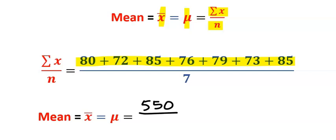Divide by the number of students in the class, which is the size of the sample data, and is seven. And we got 78.57. This is the mean.